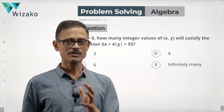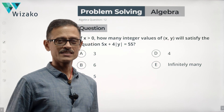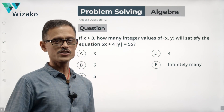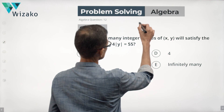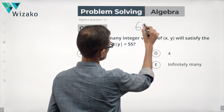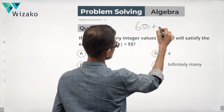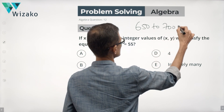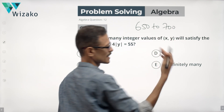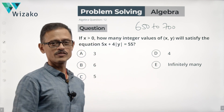Hello everyone. This is a beautiful question. This is a medium difficulty GMAT problem solving question. I'll classify the question as a GMAT 650 to 700 level question — more 700-ish than 650.